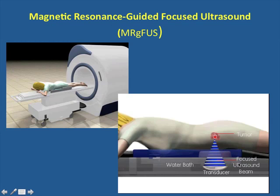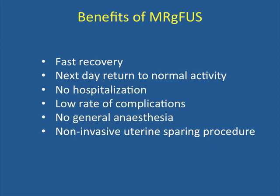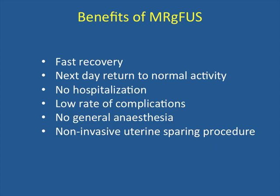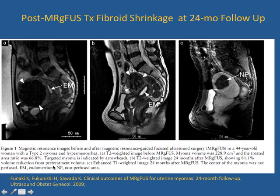The magnetic resonance-guided focused ultrasound is a promising non-invasive intervention using high-intensity focused ultrasound waves to ablate tissues. The MRI guides and monitors treatment. The first FDA approval was in 2004 for fibroid treatment. During the procedure, focused ultrasound energy is guided using MR thermal imaging, which provides a three-dimensional view of the target tissue allowing precise focusing of ultrasound energy. The MRI also provides quantitative real-time thermal images and allows the physician to ensure adequate temperature for thermal ablation. Benefits include fast recovery with no hospitalization, low complication rate, no general anesthesia, and a non-invasive uterine-sparing procedure. MRI shows the pre-procedural lesion and then 24 months later the shrinkage of the tumor.